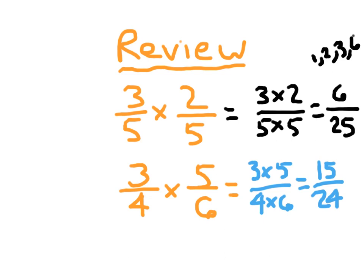15 twenty-fourths, I recognize that they are both divisible by 3. So I will start with that and see where it gets us. 15 divided by 3 is 5. And 24 divided by 3 is 8. And I know that 5 eighths is in simplest form.